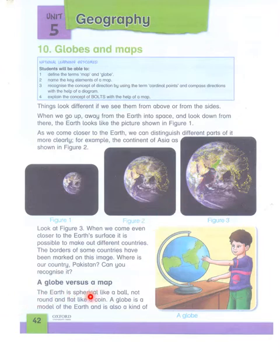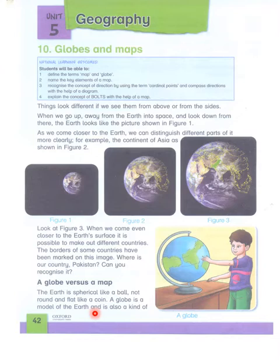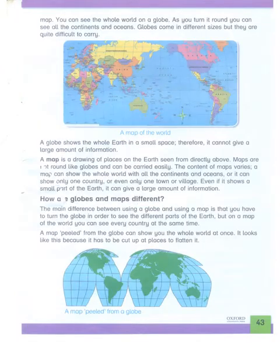Globe versus map — globe या map में क्या फरक होता है? The earth is spherical like a ball, not round and flat like a coin. जो जमीन है वो spherical है — it's not exactly round but it is spherical, and it's not flat like a coin. A globe is a model of earth and is a kind of map — globe भी जमीन का एक किस्म का नक्शा ही होता है।